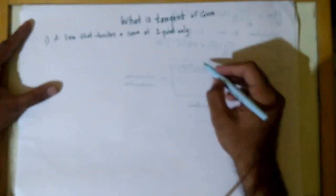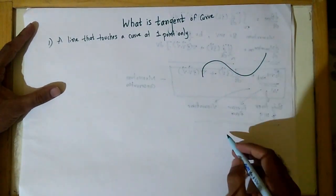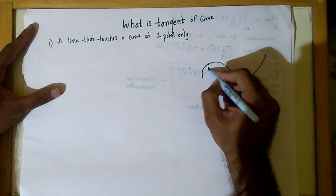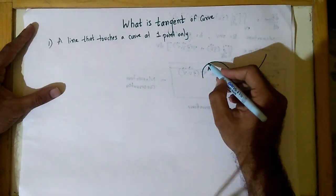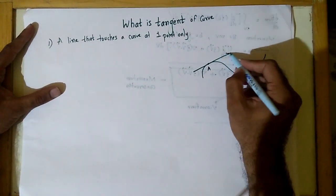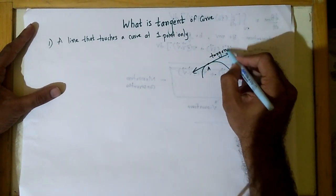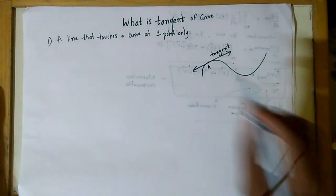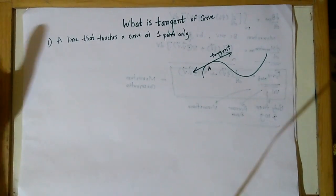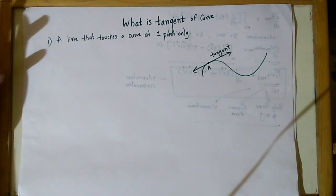Before going into detail, let us say this is a curve, a typical curve. Suppose I want to have a tangent at this point A — everyone would agree that this line is a tangent. Now, how do I define a tangent? The first thought that generally comes to people's mind is: a line that touches a curve at one point.